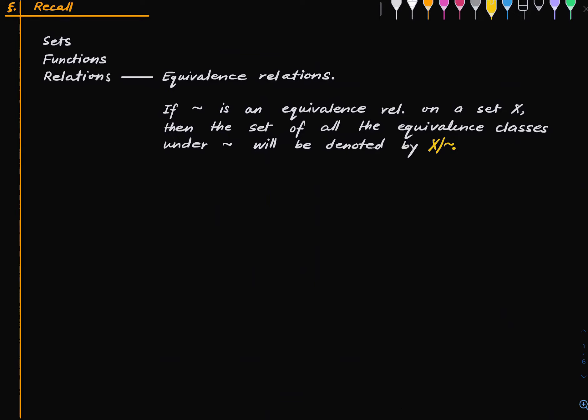Here we will only be talking about sets and functions. When we talk about quotienting in mathematics, it is usually with some richer structure like a linear space, a group, or a topological space. But here we will be dealing only with sets, and hence the things here are very simple. It may also seem somewhat tautological, but it is a good idea to familiarize oneself with this. The prerequisites are basically the language of sets, functions, and relations — especially the notion of equivalence relations.